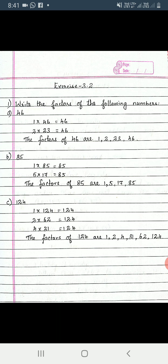So 46 is present in table 1: 1 into 46 is 46. Then in 2 table, 2 into 23 is 46. After that, we don't have the possibility to see number 46 in any other table. So the factors of 46 are 1, 2, 23, and 46.